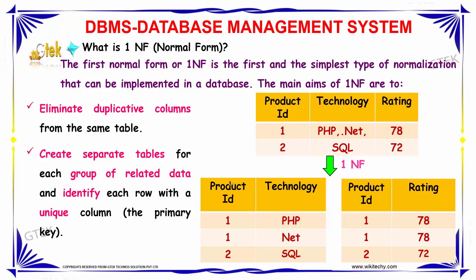The key — that is, the primary key in this case — is product ID. Now the data is in first normal form.